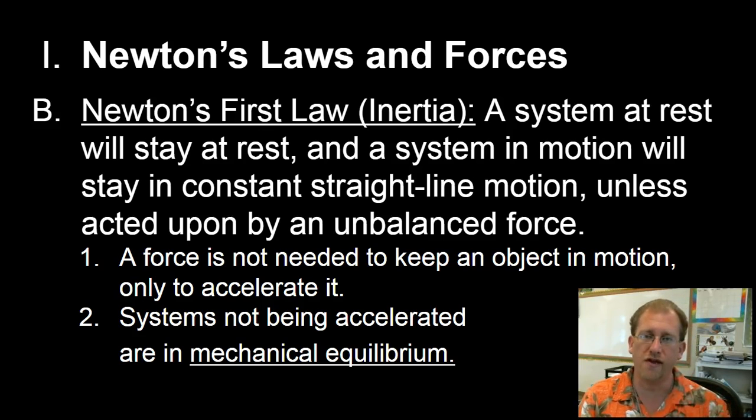So if something is moving, it stays moving unless something acts on it. If something is at rest, it stays at rest unless something acts on it. Now in our real world experiences, we don't see moving things keep moving forever because we live in a world of friction. And eventually, things slow down and stop. But the reason it slowed down and stopped is not because motion runs out. But it's because an unbalanced force, the friction that resists motion, acted on the object. In a frictionless environment, things do go moving on forever and ever and ever. So a force is not needed to keep an object in motion only to accelerate it. And acceleration can be speeding up, slowing down. It can also be turning it, changing its direction. Systems not being accelerated are in a state called a mechanical equilibrium.